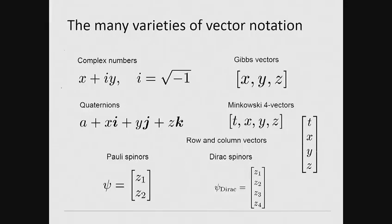Instead, the Gibbs vector system is often supplemented by complex numbers used in describing electrical circuits, quaternions for rigid body rotations, Minkowski four vectors for space-time, and complex vectors referred to as Pauli spinors and Dirac spinors in quantum mechanics.